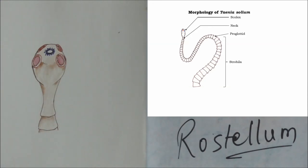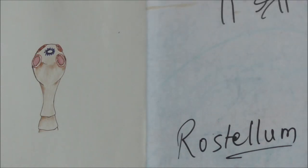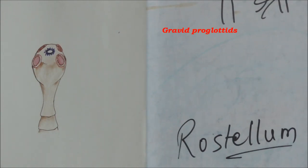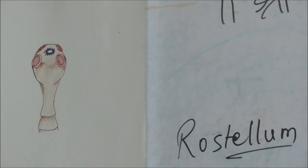There are about 800 to 2000 proglottids forming the entire body strobila. Out of these, the first few are absolutely immature proglottids, the next few are sexually matured, and the last few contain only fertilized eggs — these are called gravid proglottids. That is how they could be distinguished.